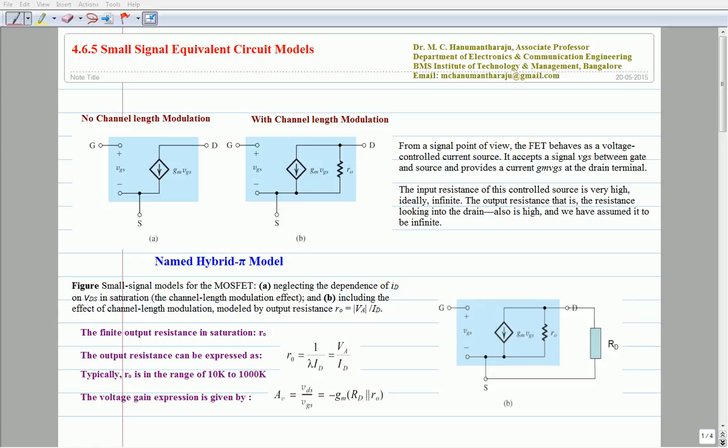Once a stable DC operating point has been established and all DC quantities are calculated, then we can perform small signal analysis by ignoring the DC quantities.